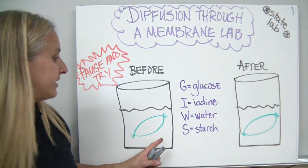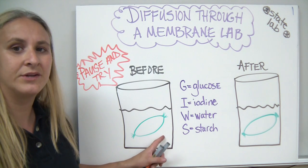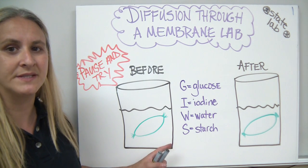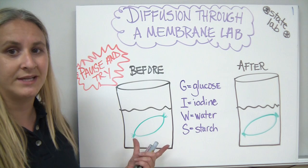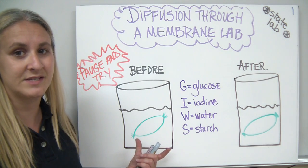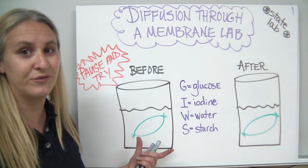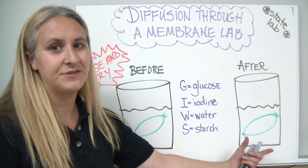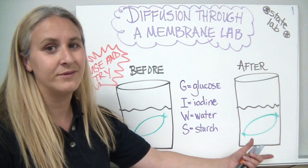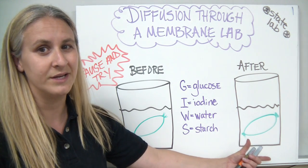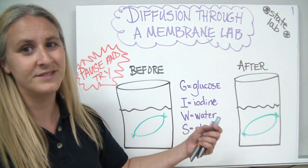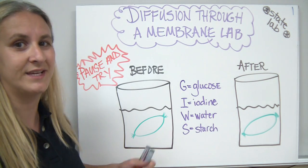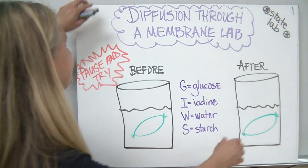Label where each of those substances appeared at the beginning of the experiment when you first set it up, and then where they appeared after the experiment once it has run. Pause, try to do your labeling, and we'll see how we did.